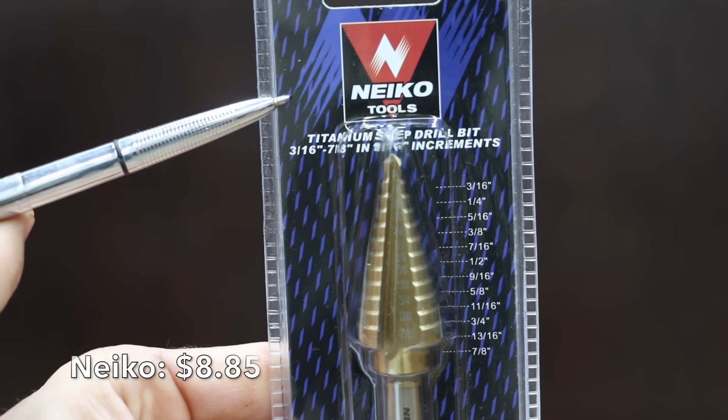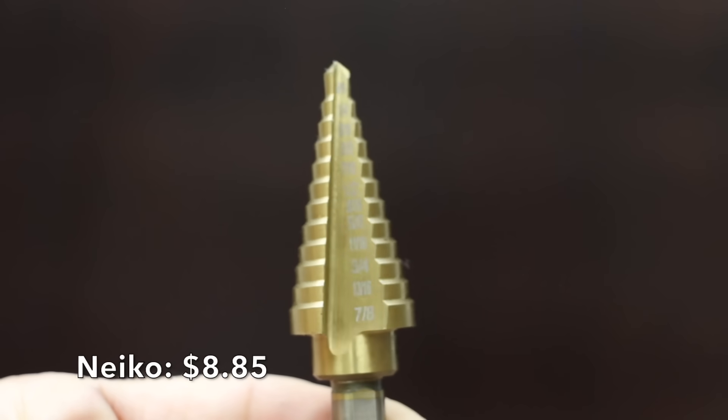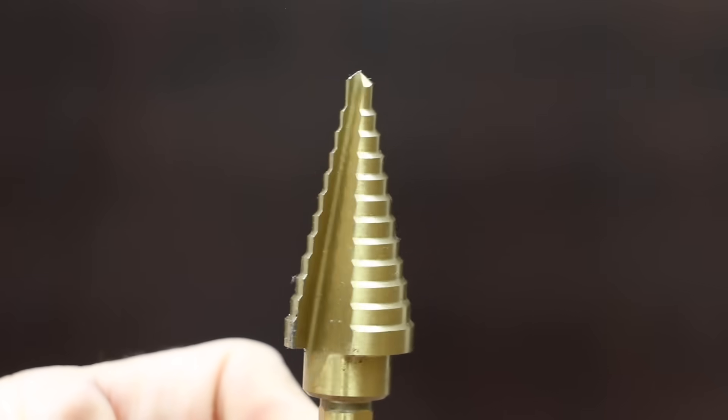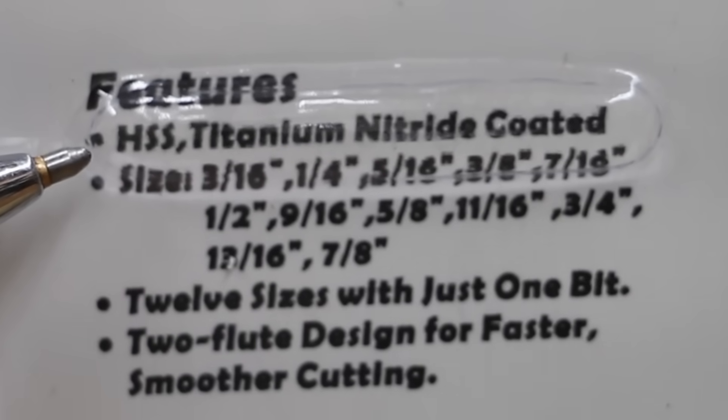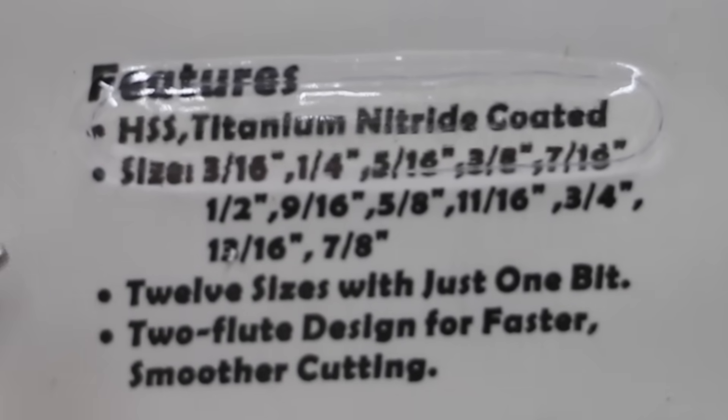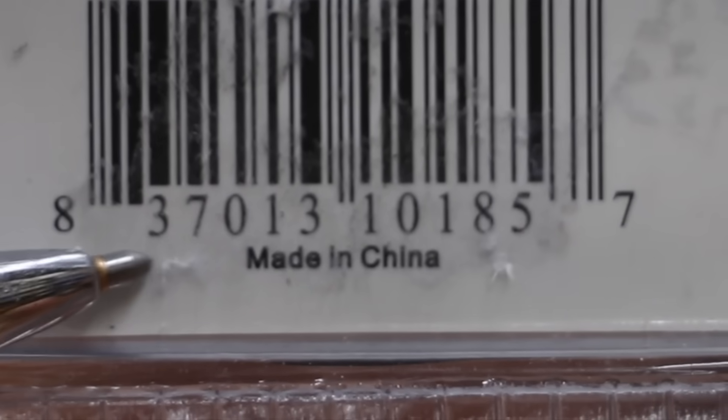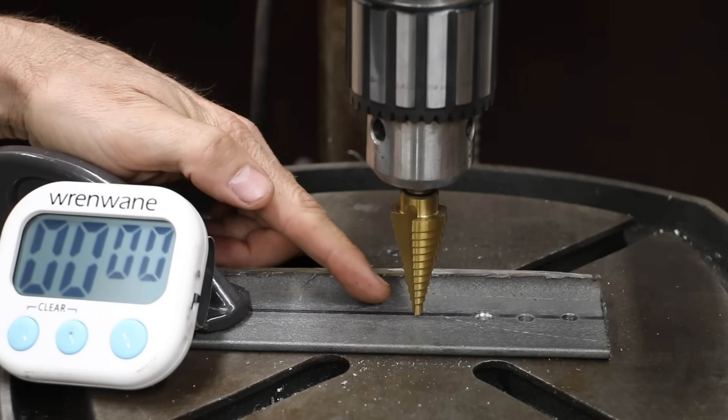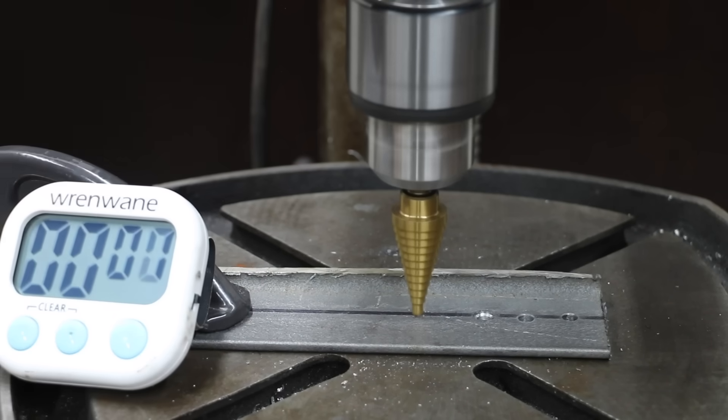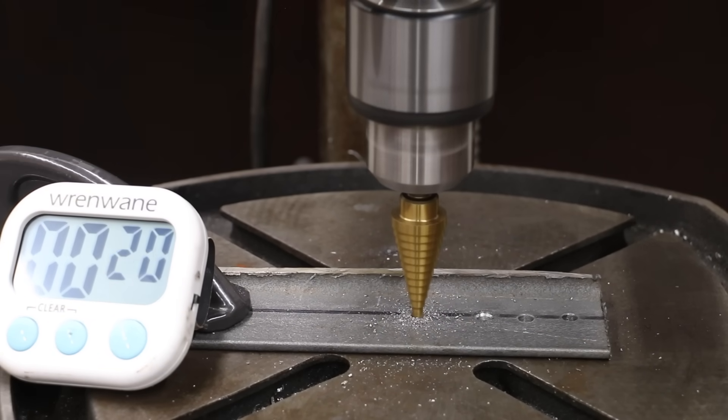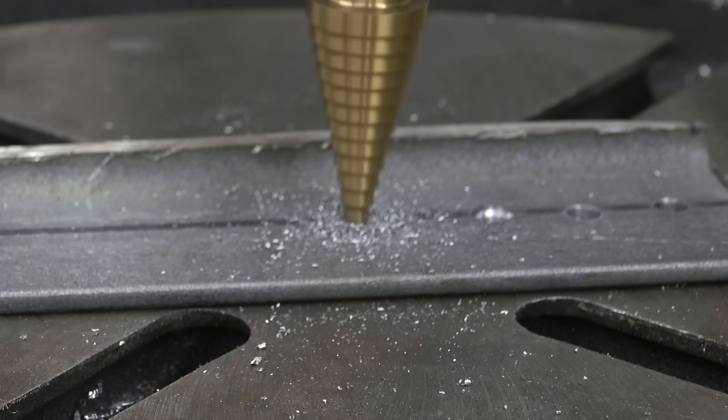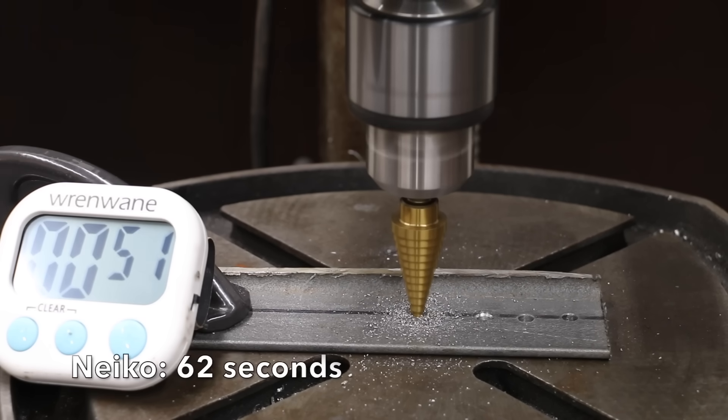At a price of $8.85, the Nikko Step Bit is the second least expensive brand we'll be testing. High-speed steel, titanium nitride coated, 12 sizes for just one bit, 2 flute design for smoother cutting. Made in China. Even though the Nikko had a smaller 3/16th drill size giving it an advantage, it was still no match for the less expensive Harbor Freight Drill Master coming in at 62 seconds to cut through the steel.